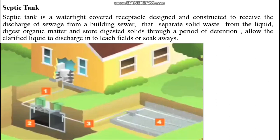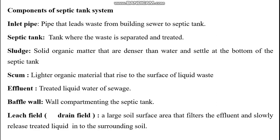Components of a septic tank system: inlet pipe — the pipe that leads waste from the building sewer to the septic tank; septic tank — where waste is separated and treated; sludge — solid organic matter denser than water that settles at the bottom; scum — lighter organic material that rises to the surface; effluent — the treated liquid water of sewage; baffle wall — a wall compartmenting the septic tank; and leach field or drain field — a large soil surface area that filters the effluent and slowly releases treated liquid into the surrounding soil.